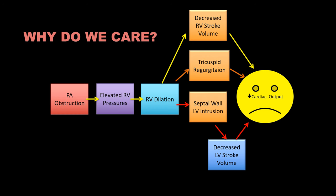Why do we care about pulmonary hypertension in the emergency department, and why does decompensated pulmonary hypertension cause cardiac arrest? Pulmonary artery obstruction leads to elevated RV pressures, causing RV dilation. Once the RV dilates, three bad things happen: RV stroke volume decreases, tricuspid leaflets don't coapt well causing increased tricuspid regurgitation, and the interventricular septum shifts into the left ventricle — a concept called ventricular interdependence — leading to decreased LV stroke volume and decreased cardiac output. Giving fluids would worsen RV dilation and could lead to cardiac arrest.